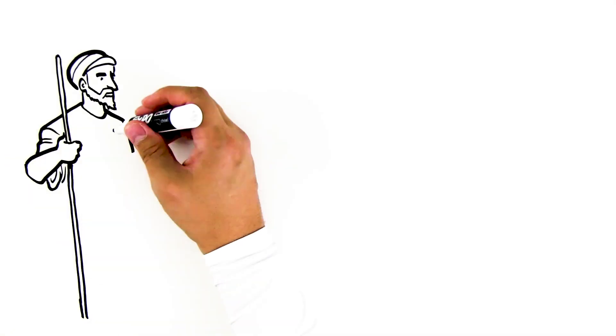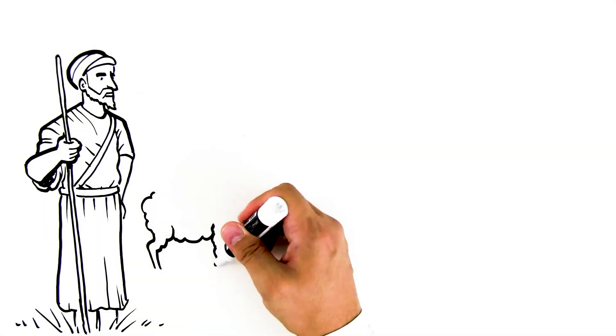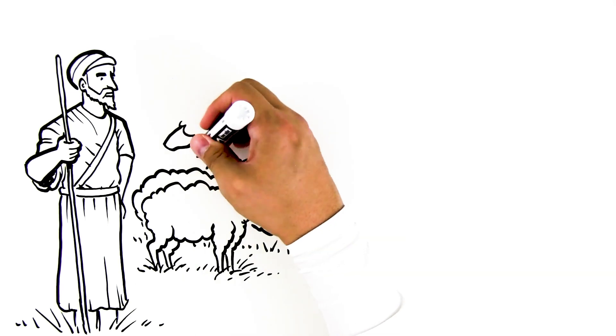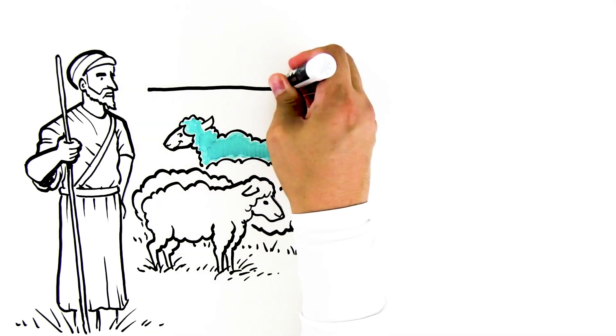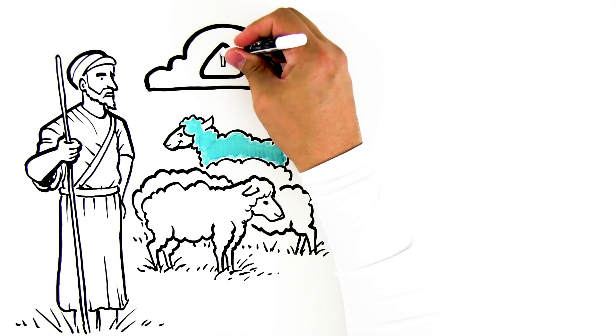Imagine a shepherd tending a flock. Something's not right. That blue sheep doesn't belong. Like this flock, your cloud environment is vulnerable to intruders.